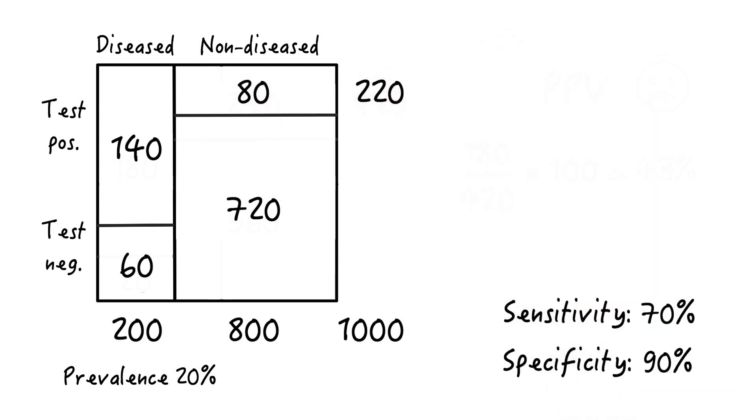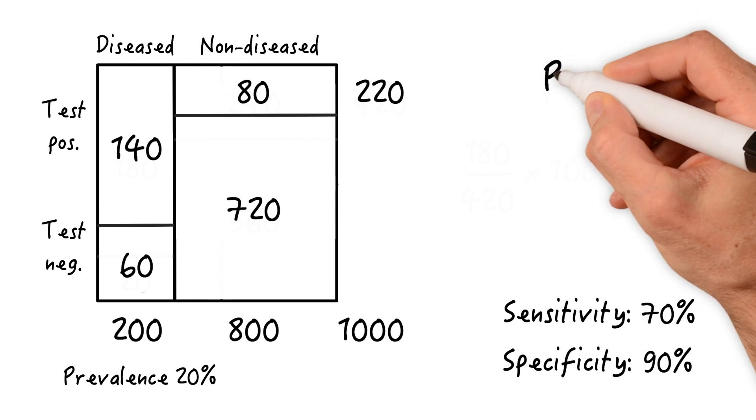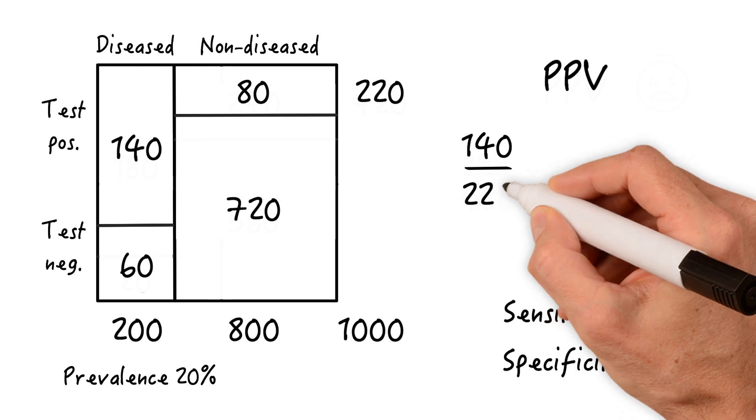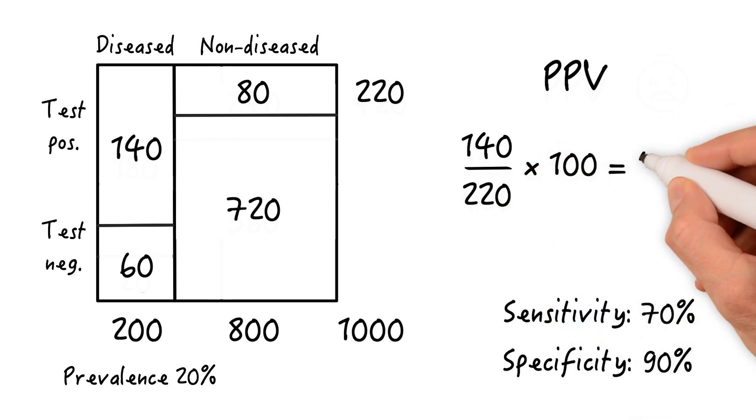So overall, there are 220 people who test positive. The positive predictive value is thus 140 divided by 220 times 100, which equals 64%, so much better than our initial 37%, right?